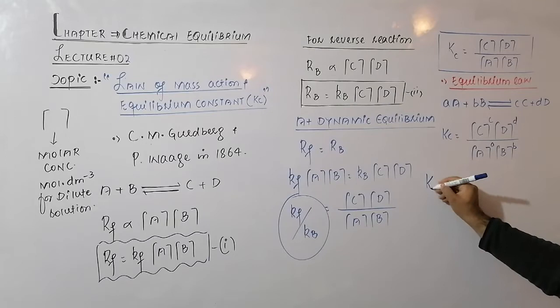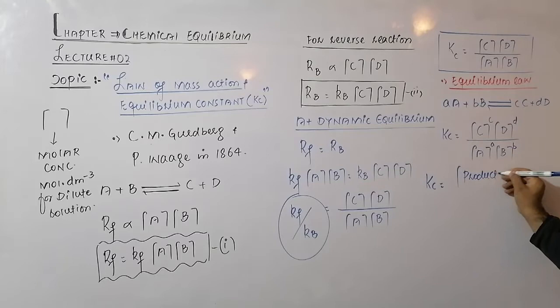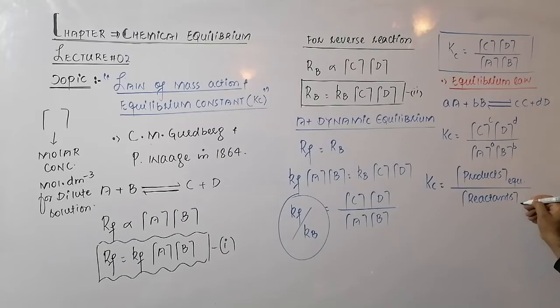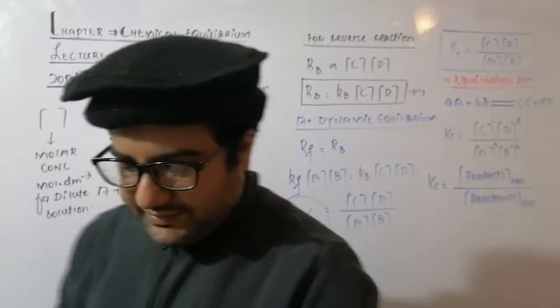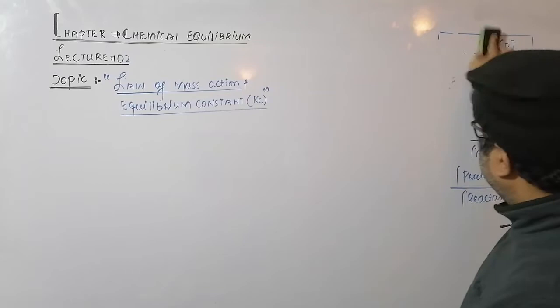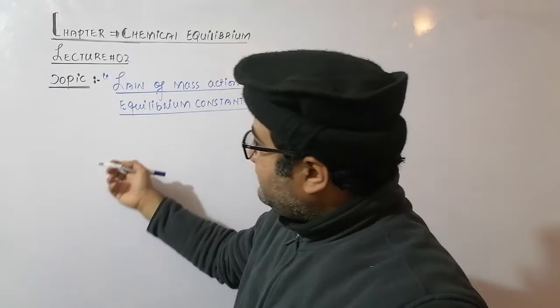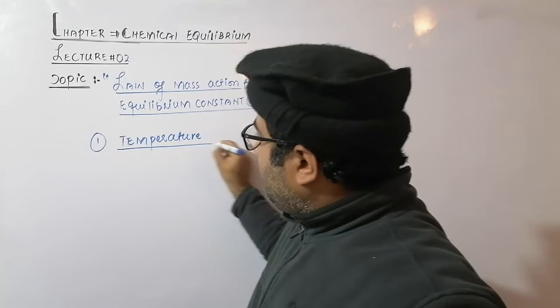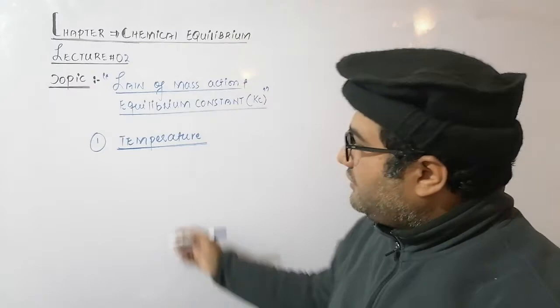So Kc is actually the ratio between the equilibrium concentration of products and the equilibrium concentration of reactants. Now, what are the factors that affect the equilibrium constant? The first and most important factor is temperature.